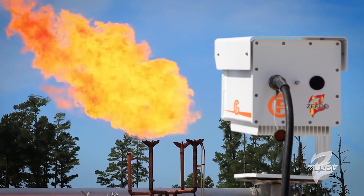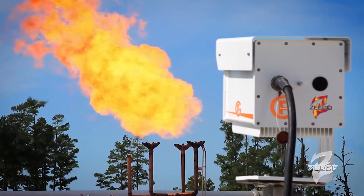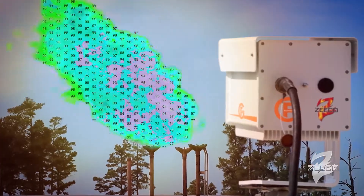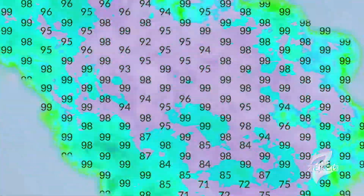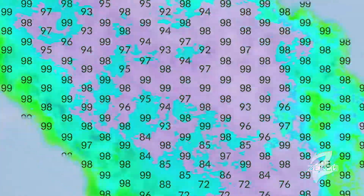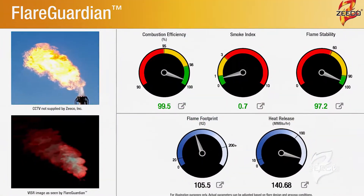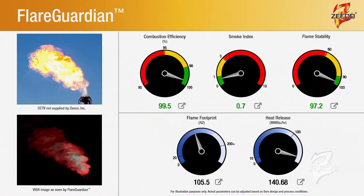Zico has developed a technology for monitoring flare performance — a device that we call Flare Guardian. Essentially it's a camera that is looking at the flame on the pixel level. It's carving out the areas of the flame that are still undergoing the combustion process, and we filter out that data so that we look at the unburned hydrocarbons, the strength of the carbon monoxide, and the relative strength of the carbon dioxide, and actually calculate the combustion efficiency of the flame.